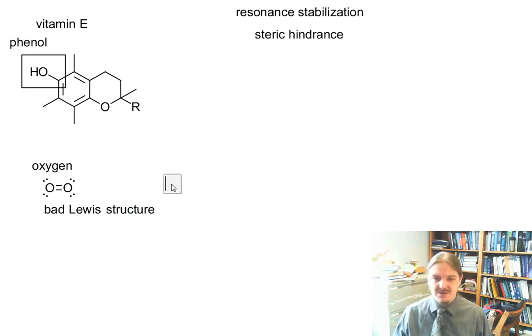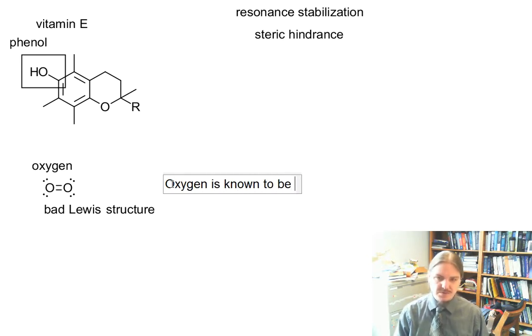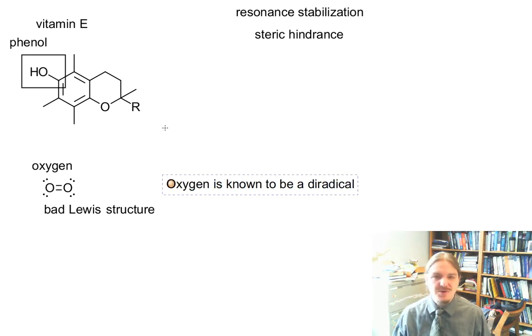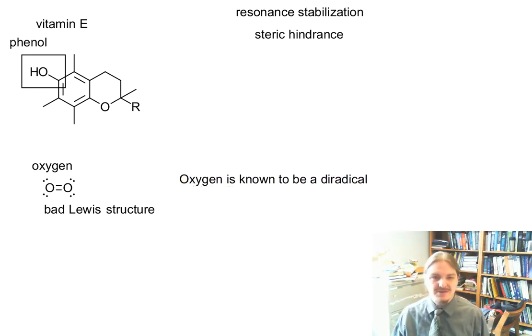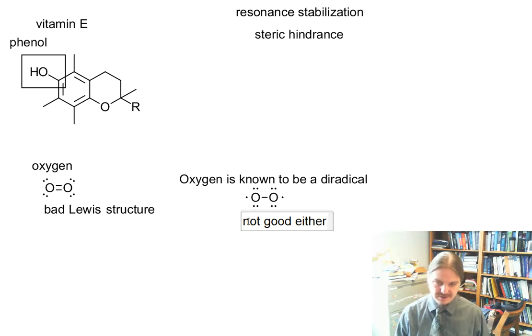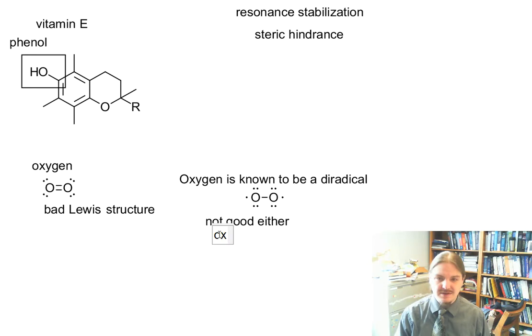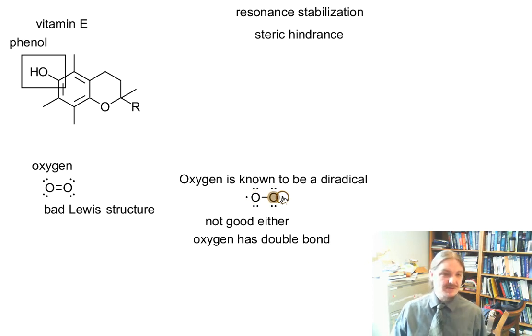And it's bad because oxygen is known to be a diradical, which means it has unpaired electrons. And so you could draw a slightly different Lewis structure for oxygen, and it's not good either because we also know that oxygen has a double bond, and so here's one of these places where resonance is our best bet unless we want to talk about molecular orbital theory. But oxygen is a diradical. There are actually unpaired electrons in molecular oxygen.